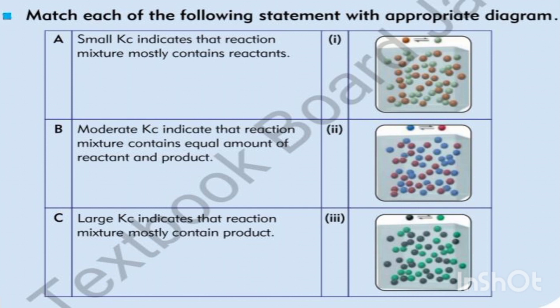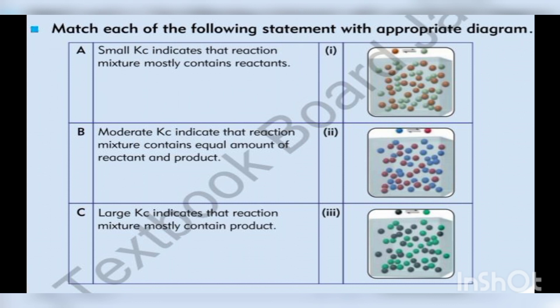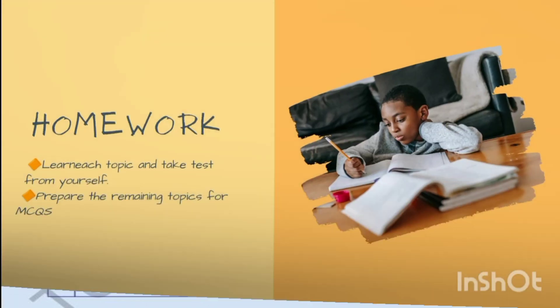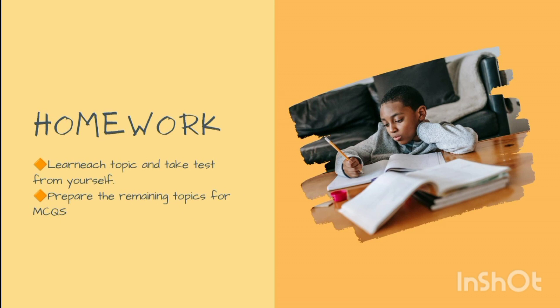Now consider this homework question: match each of the following statements with the appropriate diagram. Option A says a small Kc indicates that the reaction mixture mostly contains reactants. You need to identify which picture shows more reactants — the red balls represent reactants and green balls represent products. Count the red balls in each diagram and find the one with more reactants than products. Share your answer in the comment section.